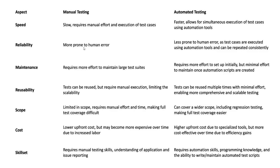Coming to reliability, manual testing is more prone to human error. But automated testing is less prone to human error, as the test cases are executed using automation tools and can be repeated consistently. When manually testing, there are chances we may fail to execute a certain case or miss a specific case entirely.